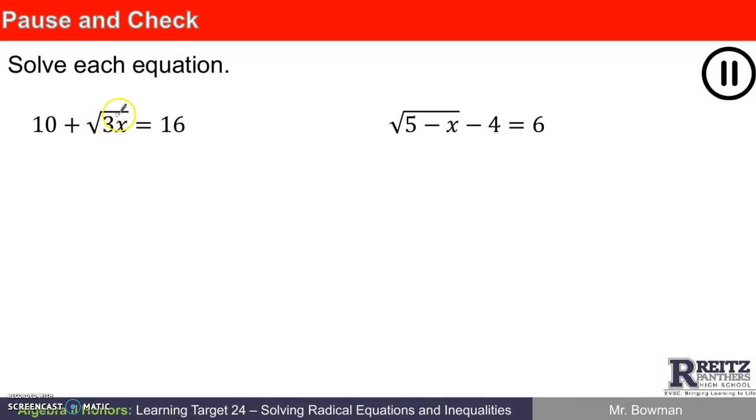To solve 10 plus the square root of 3x equals 16, I'd like to subtract 10 from each side of the equation first. Which would give me the square root of 3x equals 6. Since I've got the square root of 3x, I'm going to square both sides. Which gives me 3x equals 36. And if 3x is 36, I think I can say that x is 12. Just to check it, 3 times 12 is 36. The square root of 36 is 6. And 10 plus 6 is 16. So it works.